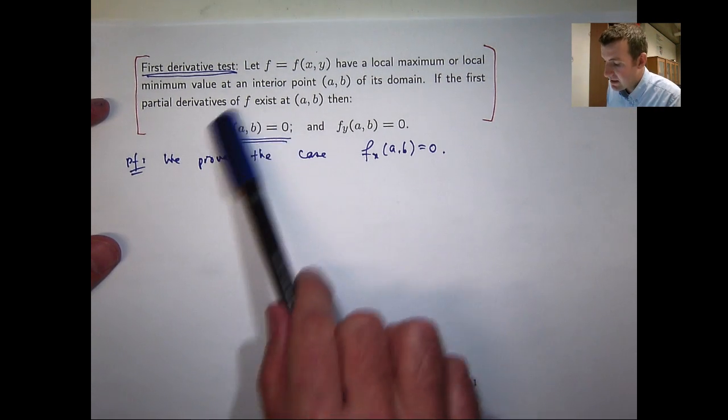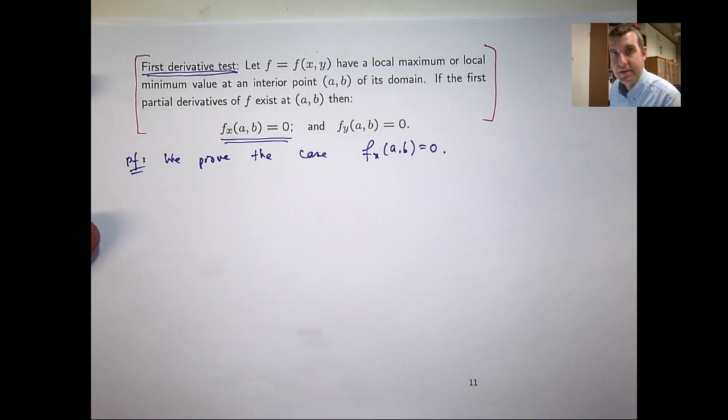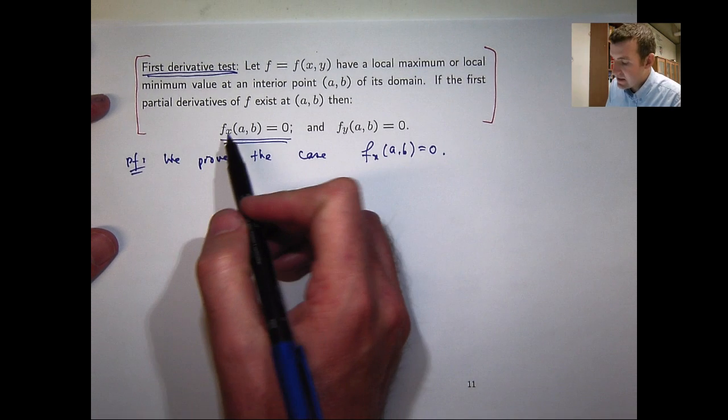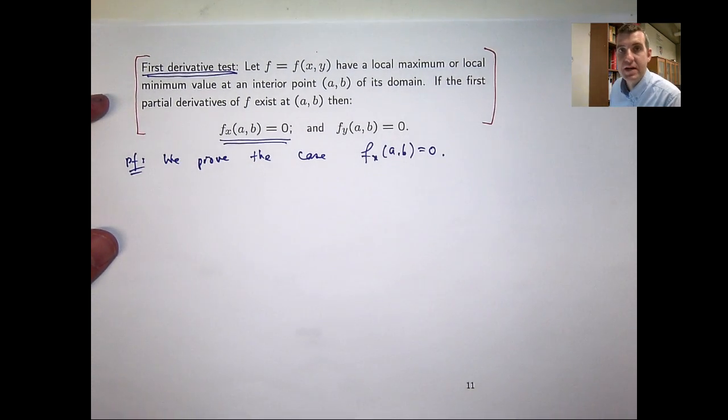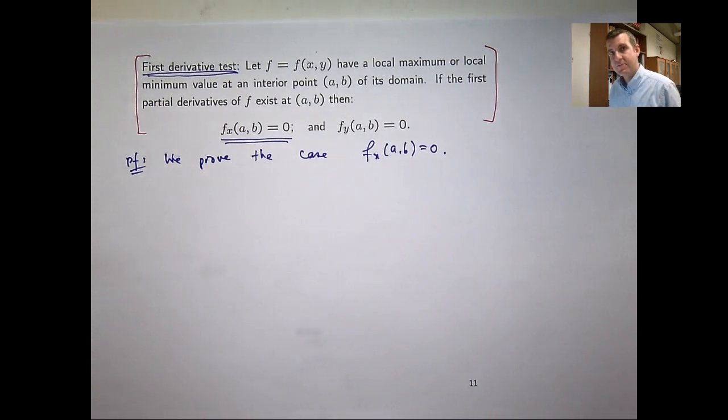Alright well let's think about this partial derivative here. Now it's a partial derivative with respect to x. So when we differentiate a function with respect to x we imagine all the y's are constant and we vary x and look at a special limit.